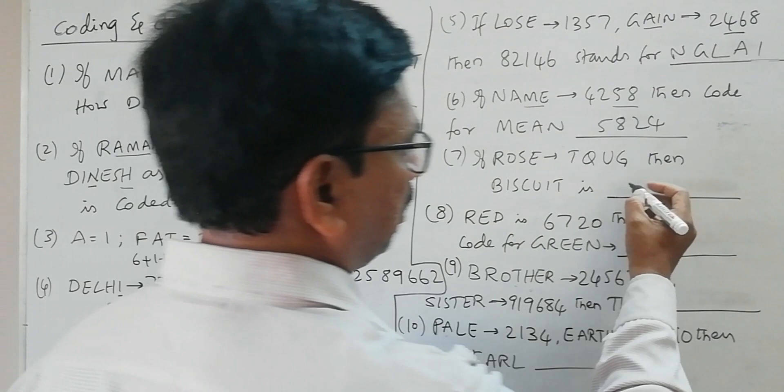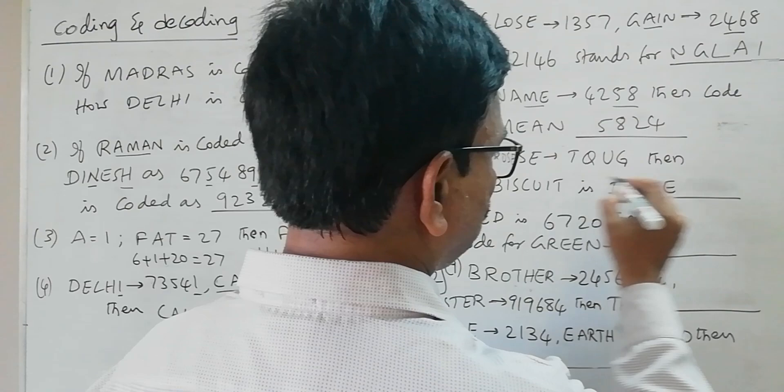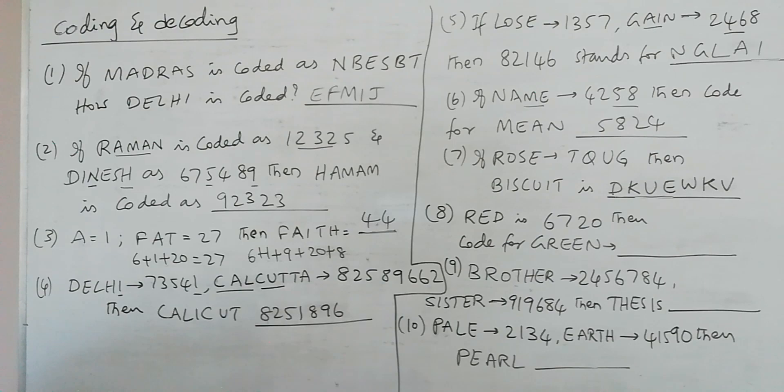So here if you observe all the letters are plus 2 of these letters. So B plus 2 is D, I-K, S-U, C-E, then U-W, I-K, T-V. So DKUEWKV is the code for BISCUIT.